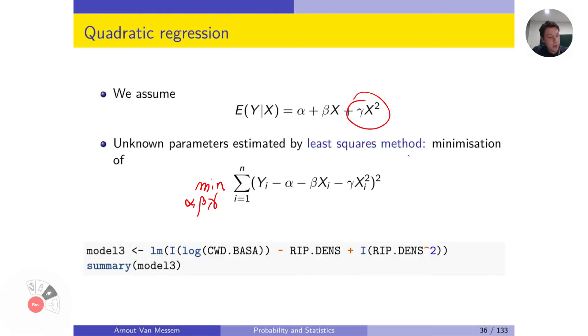This minimization is done as before. So we take the derivative with respect to alpha, the derivative with respect to beta and the derivative with respect to gamma. We set them equal to zero and we solve these equations. So we have now three equations for three unknowns, and this gives us formulas for alpha, beta and gamma.